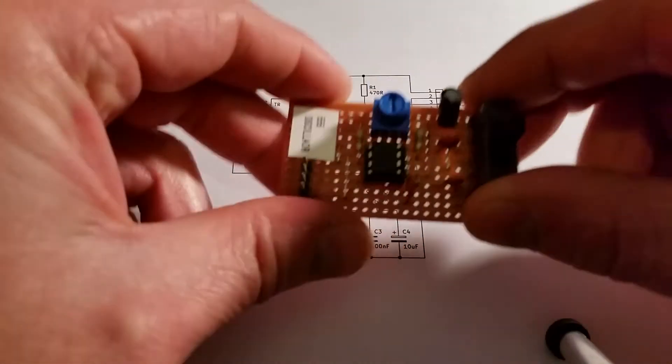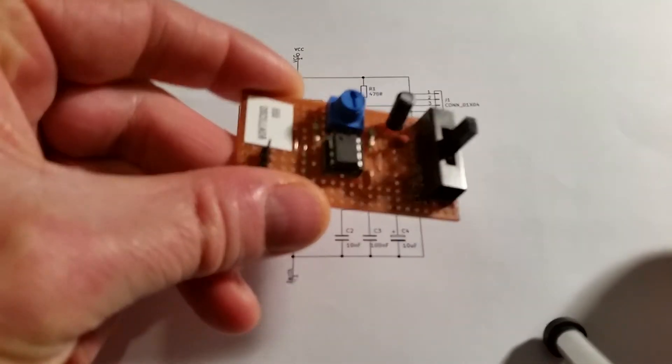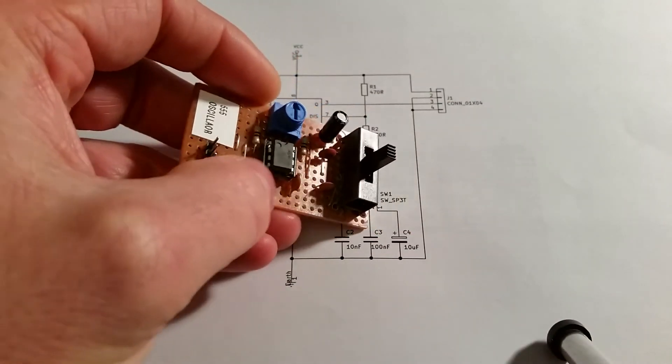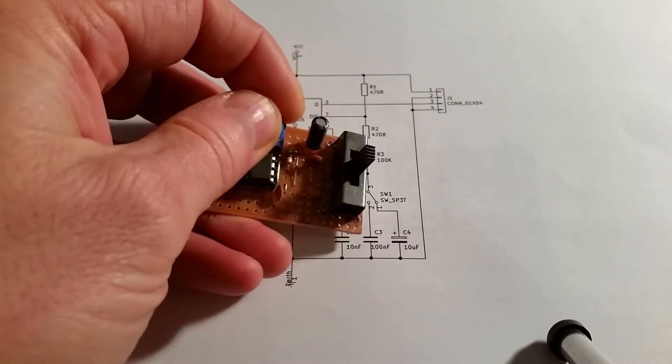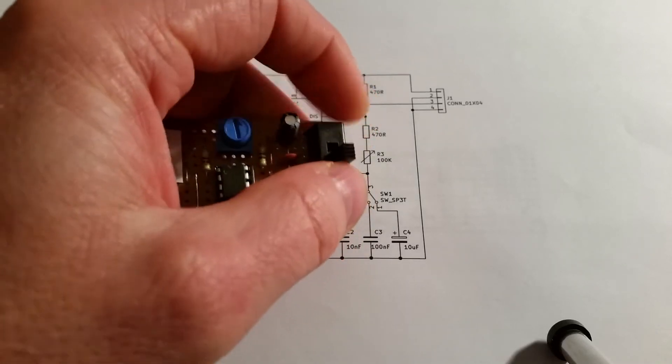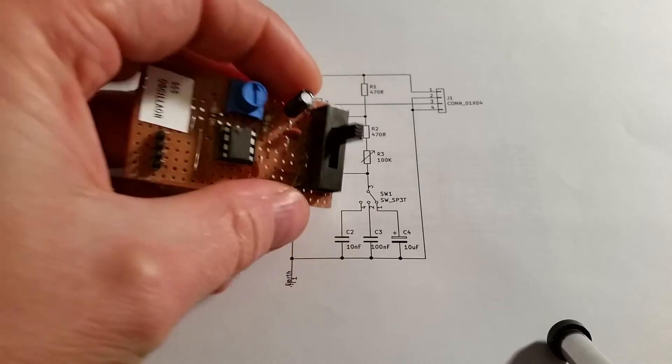So here's a circuit where I've built up a 555 timer. So I've got the integrated circuit, I've got the potentiometer to adjust the frequency, and also a switch to select one of three ranges. And I'll power this up.